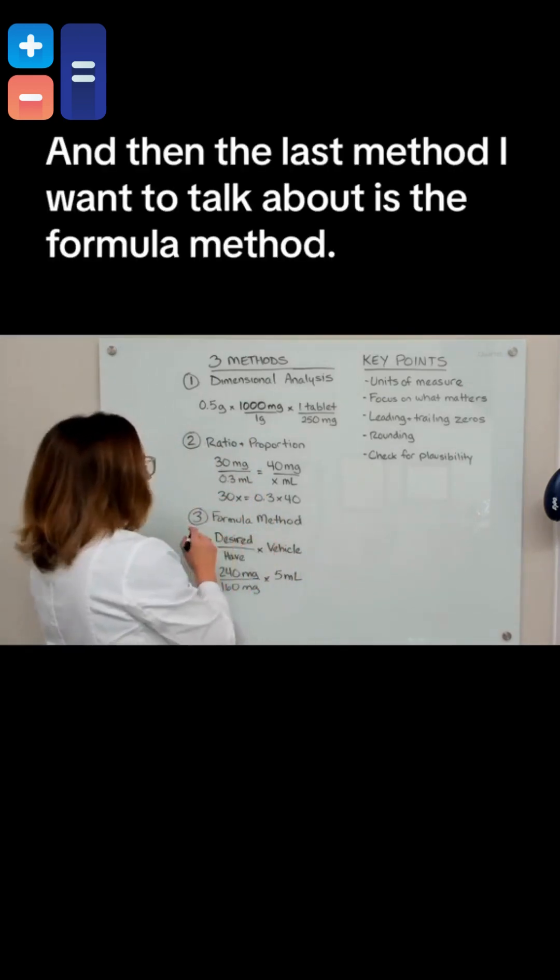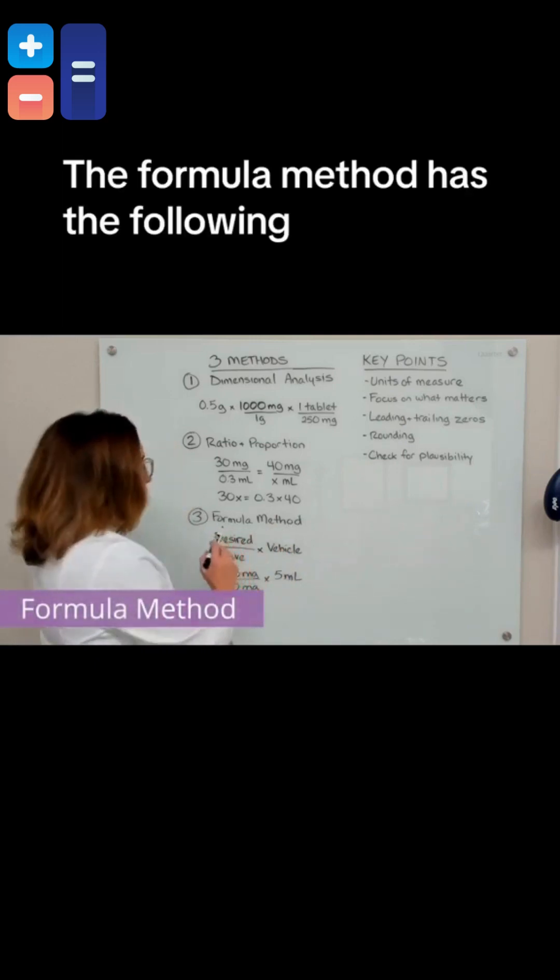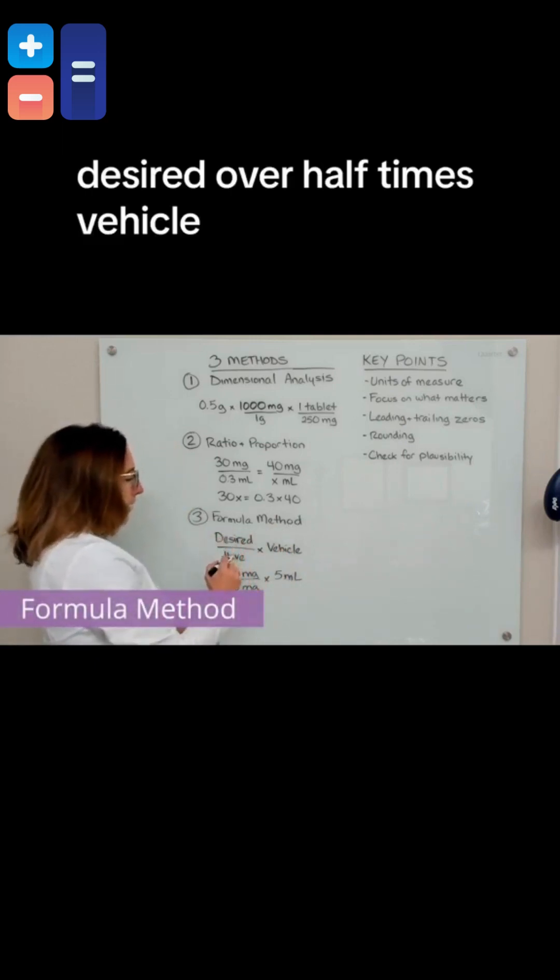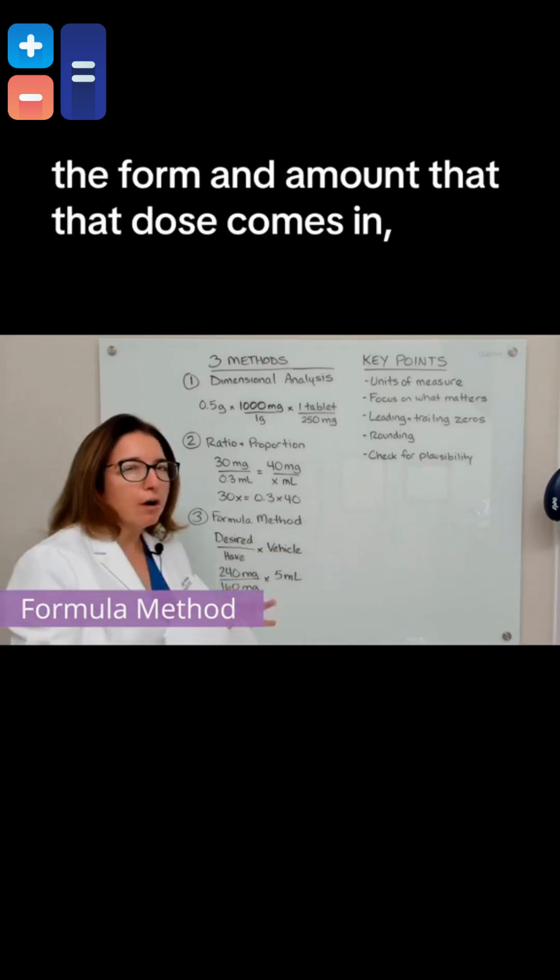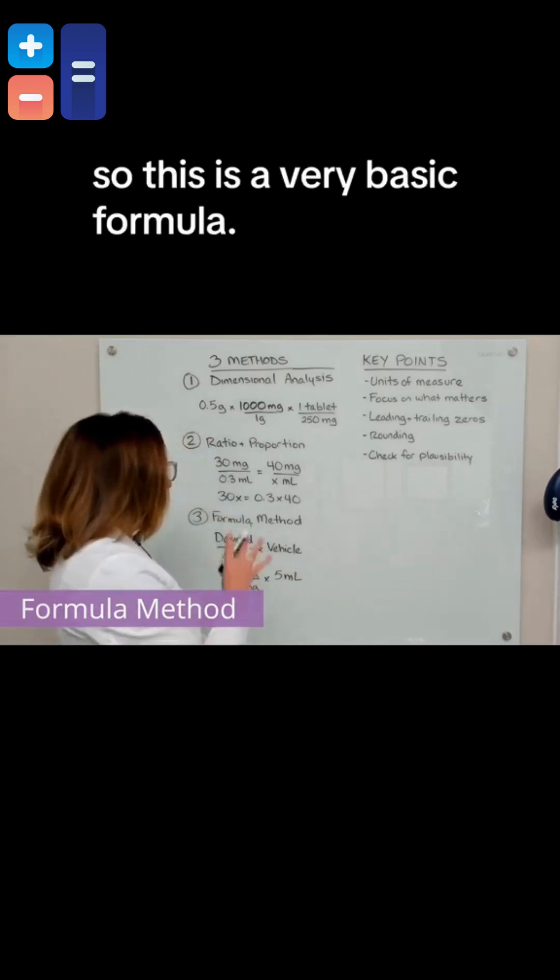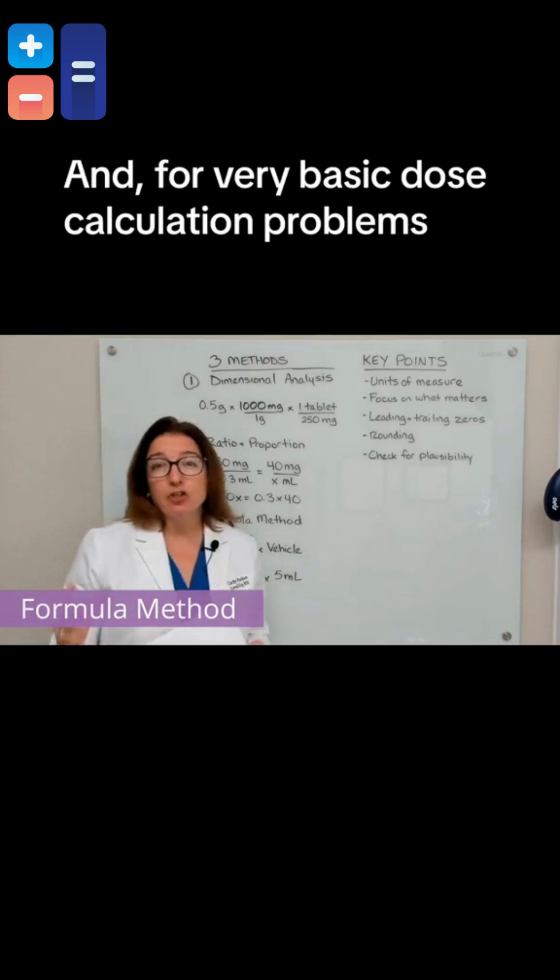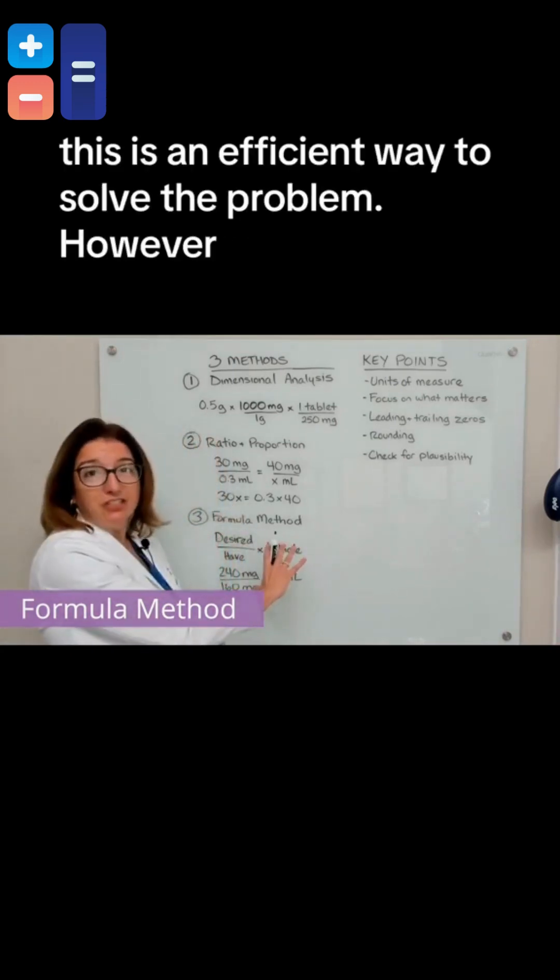The last method I want to talk about is the formula method. The formula method has the following formula: desired over have times vehicle. This is the desired dose over the dose you have. And the vehicle is the form and amount that that dose comes in. This is a very basic formula. And for very basic dose calculation problems, this is an efficient way to solve the problem.